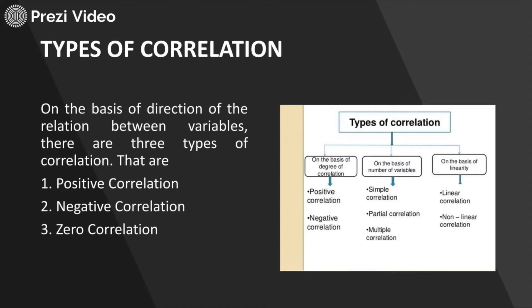The correlation value is represented by R. If the value of R lies between 0 to positive 1, it is said to be positive correlation. If the value of correlation coefficient R lies between minus 1 to 0, it is said to be negative correlation. And if R is actually 0, it simply means there exists no correlation between variable X and variable Y. Plus 1 represents perfect correlation, 0 means no correlation.